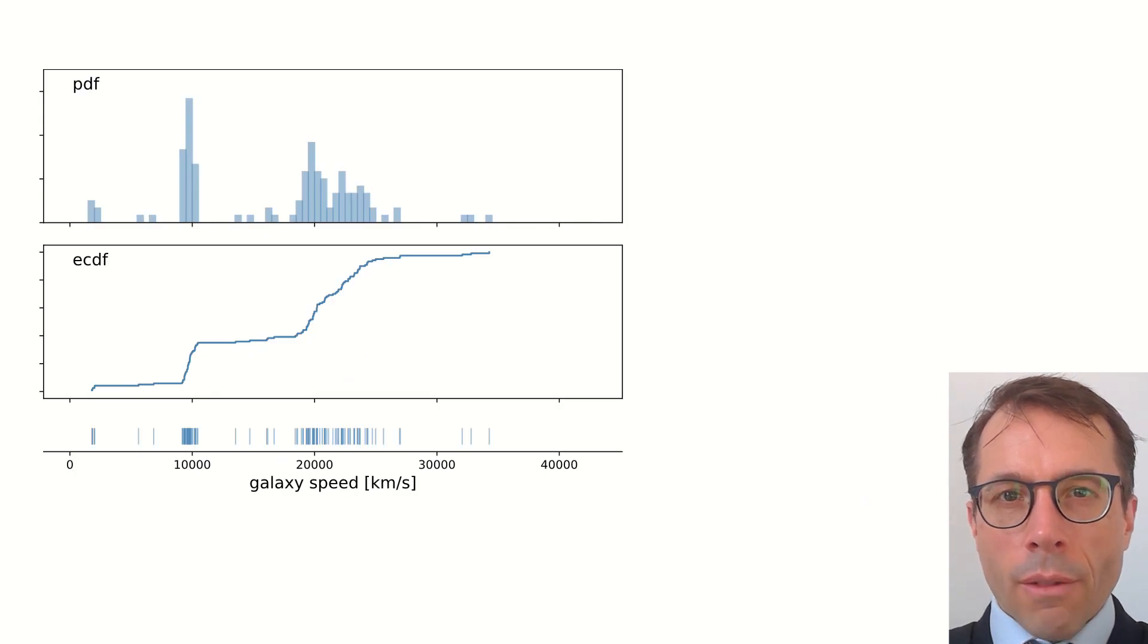Here is the ECDF for the Galaxies dataset we saw at the beginning of this video. It's an increasing function, of course, going from 0 to 1. It has steep bits, where there are many data points, and flat bits where there are few data points.